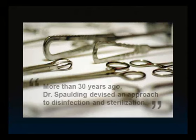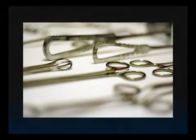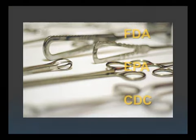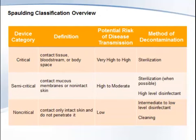More than 30 years ago, Dr. Earl Spaulding devised an approach to disinfection and sterilization. This classification scheme has been retained, refined, and successfully used by infection control professionals and organizations such as the FDA, EPA, and CDC. Spaulding believed the nature of disinfection could be understood readily if instruments and items for patient care were categorized as critical, semi-critical, and non-critical, according to the varying degree of risk of infection involved in the use of the items.